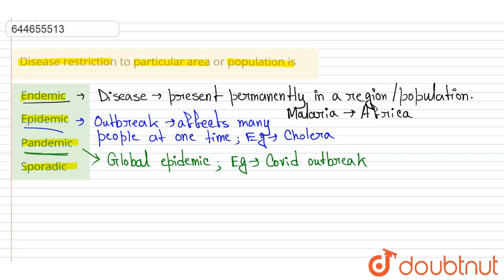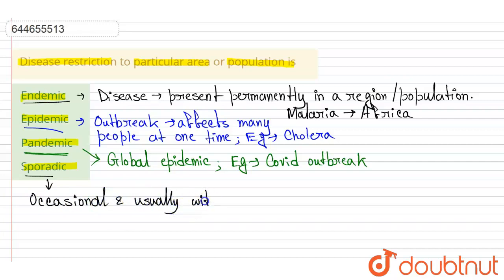The next option is sporadic. Diseases that are seen only occasionally and usually without geographic concentration are known as sporadic diseases. They are occasional and generally lack geographic concentration.